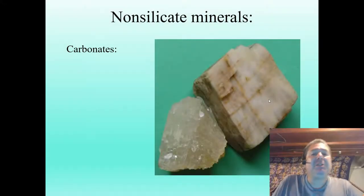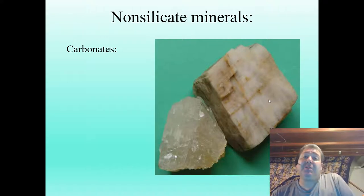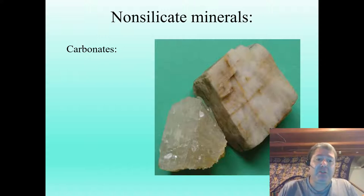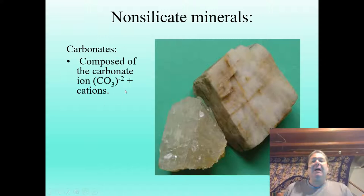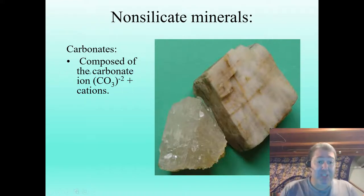Now that we've seen the silicate minerals, let's take a look at the non-silicate minerals. The first group to look at are the carbonates — these are minerals composed of the carbonate anion group, the carbonate ion CO3.